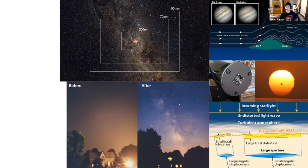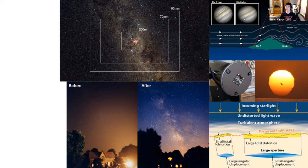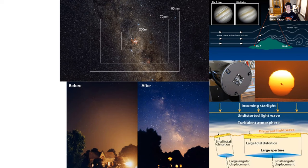Atmospheric distortion mainly matters for planetary viewing — small objects like planets and stars. For large objects like the Milky Way and nebulas, the situation is different. Most people think nebulas are hard to see because they're small, but actually they are much bigger than planets. A planet would be the size of a star by comparison. For nebulas, the biggest issue is light pollution — you cannot afford any light pollution at all. So: atmospheric distortion for planets, light pollution for deep sky objects like nebulas and galaxies.